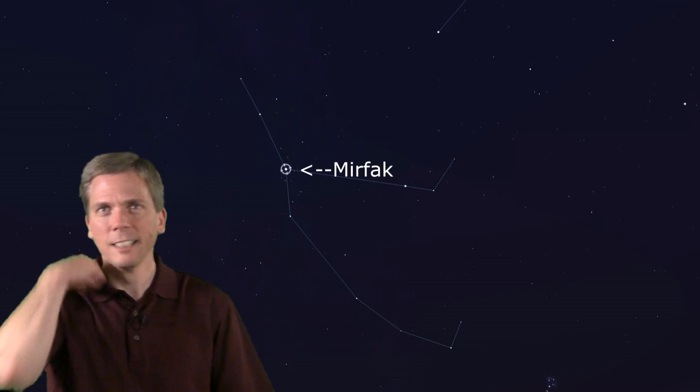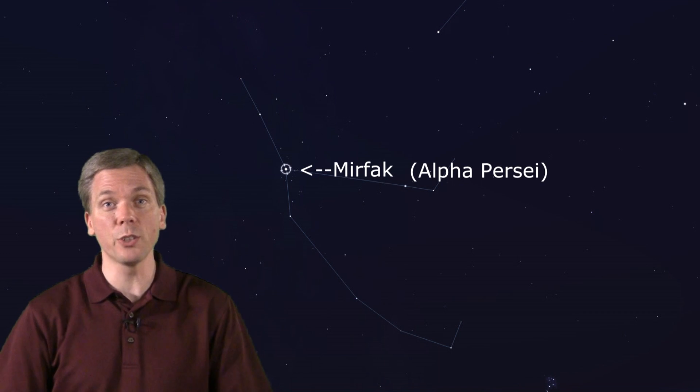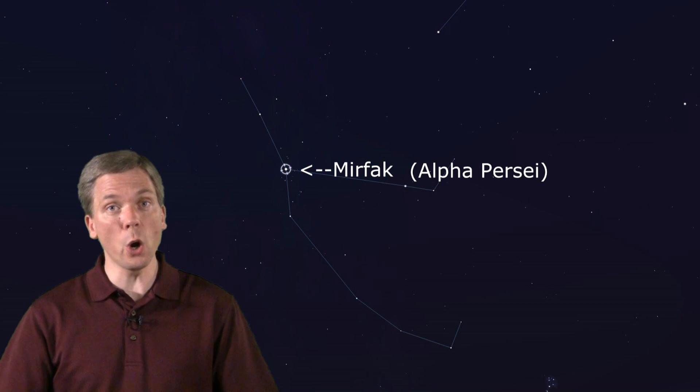Murphak is of Arabic origin and means elbow. It is also known as Alpha Persei, likely designated as such due to it being the brightest star in the constellation. Conveniently, there's a rather large open cluster right around this star, known as the Alpha Persei cluster.